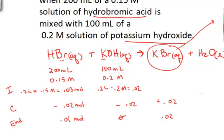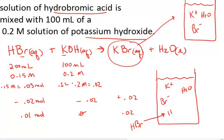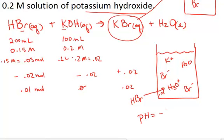So the question is: what's the pH of the solution? Now that we know what's actually left — the potassium bromide salt, water, and some remaining hydrobromic acid — we can determine the pH. HBr in water ionizes 100%, existing as the hydronium ion and the bromide anion. So we have 0.01 mole of hydronium ion. All we really care about for the pH is the amount of hydronium ion, which is 0.01 mole. The pH equals the negative log of the hydronium ion concentration in molar units.